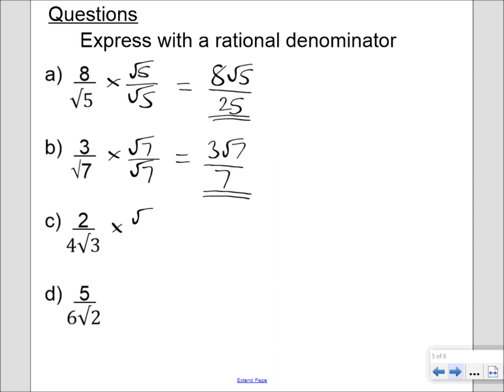For this one, all I do is multiply by root 3 over root 3, so I end up with 2 root 3 on the top, and on the bottom, 4 times 3, which is what I get when I do root 3 times root 3, 4 times 3 is 12. Now, careful of this one, because 2 twelfths simplifies to a sixth, so you end up with root 3 over 6. Again, that's got a rational denominator. There's no root appearing in the denominator at all.